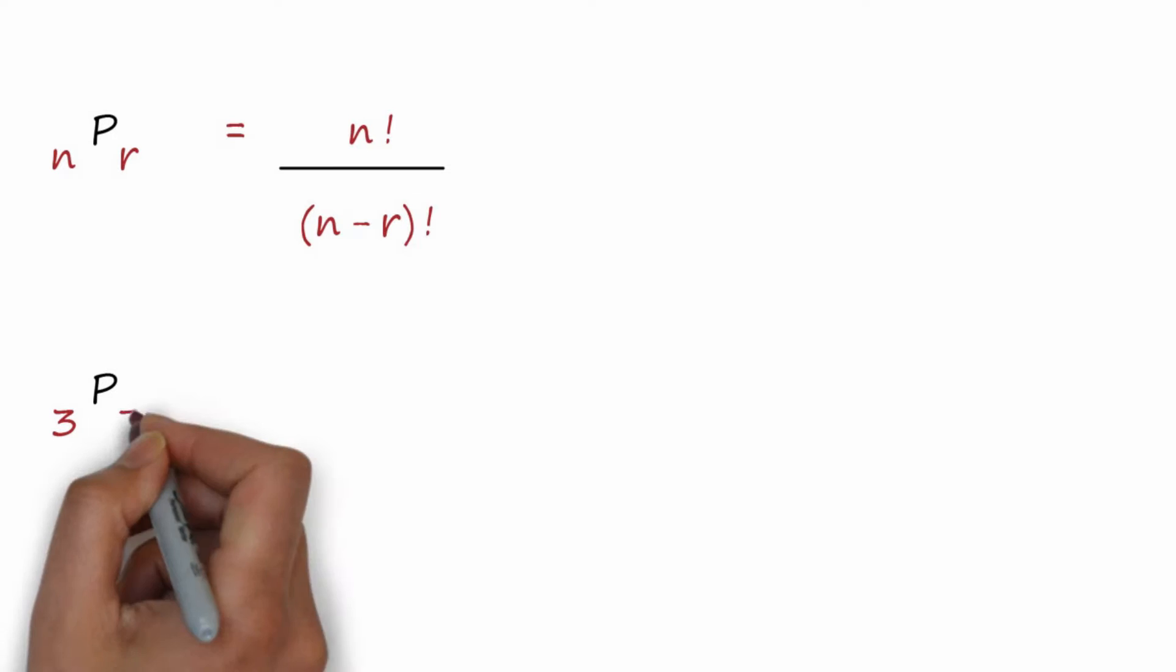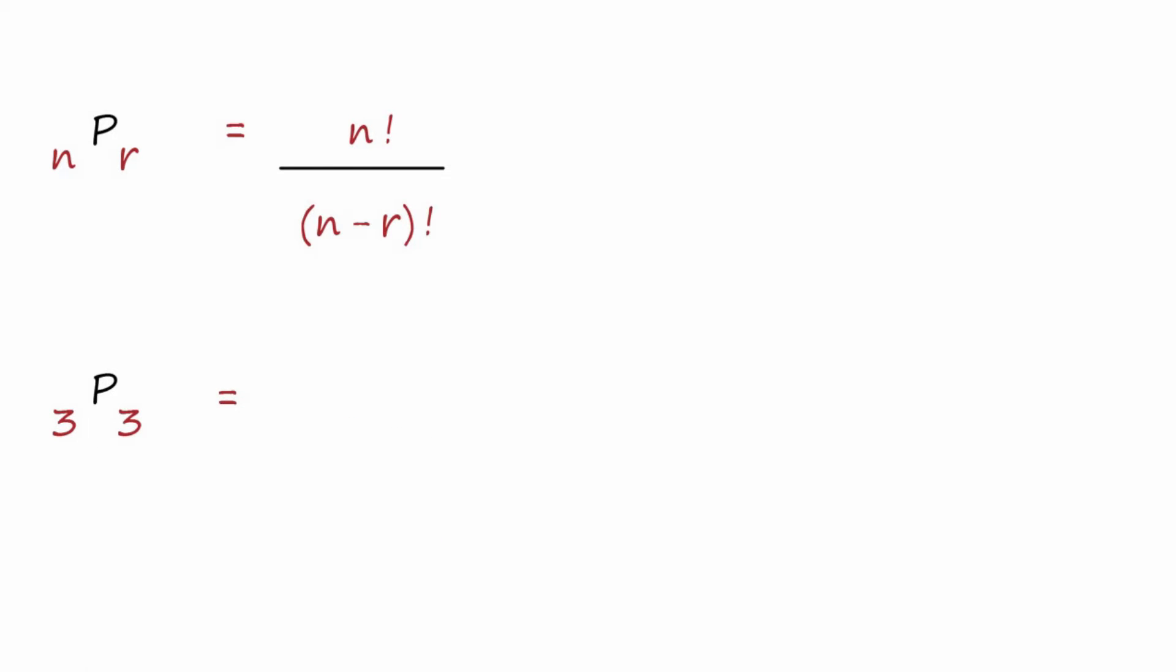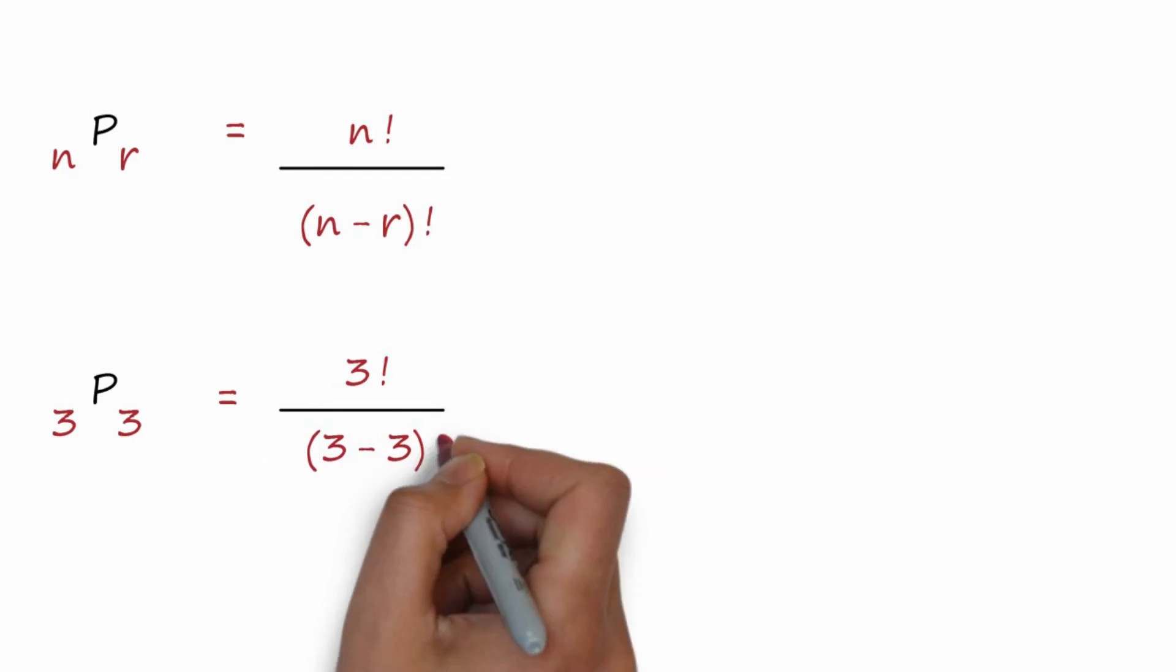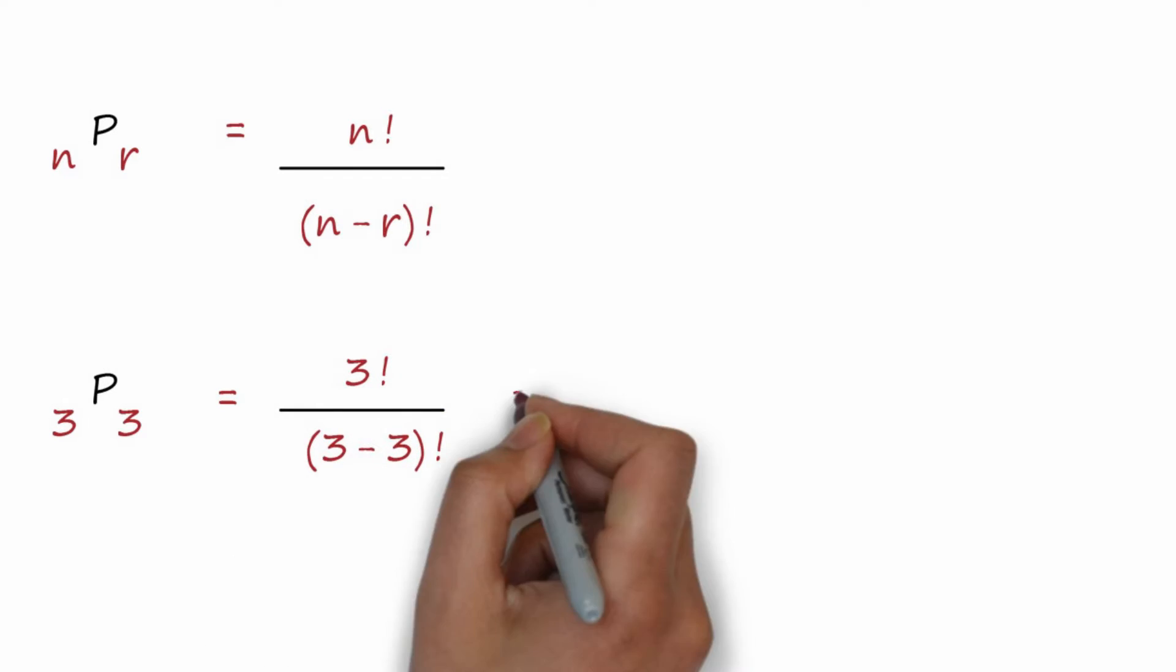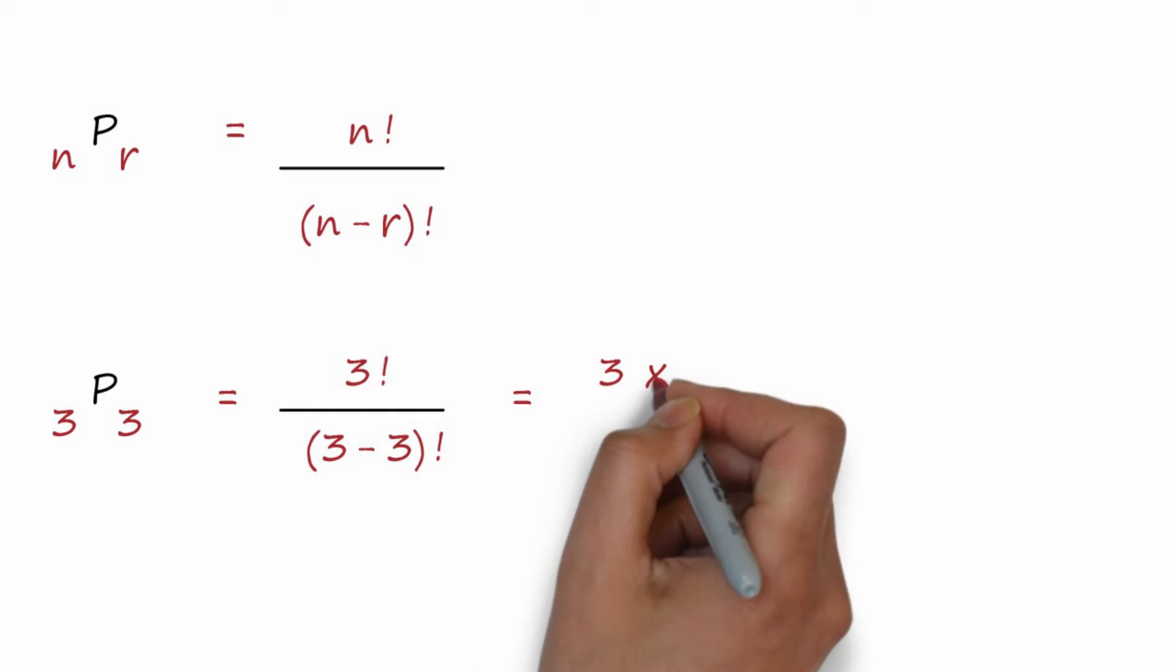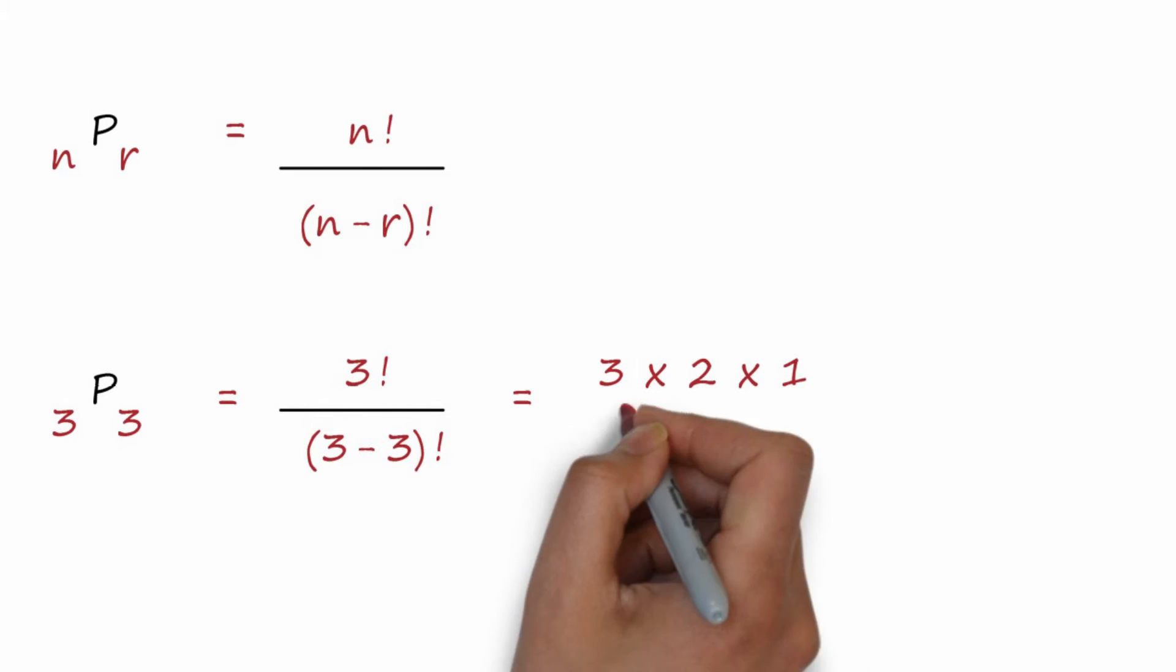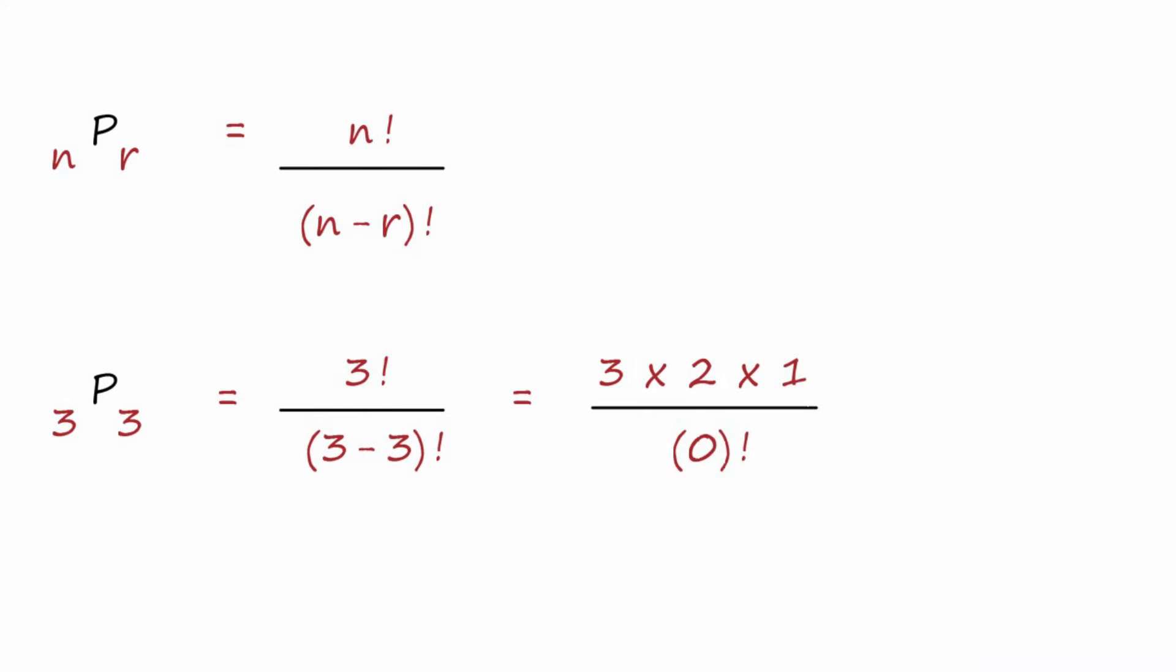In this case, we had three things taken three at a time, so N is three, so we have three factorial divided by, and then N minus R is three minus three factorial, which equals three factorial, three times two times one, and of course, three minus three is zero factorial, but that has a definition.